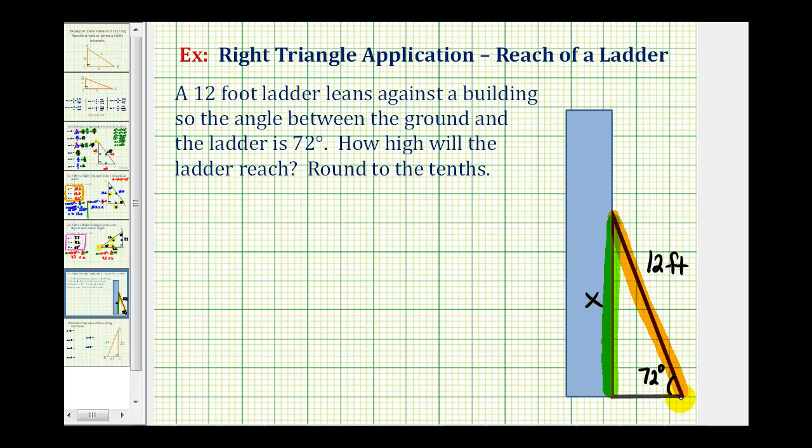And since the sine function value is equal to the ratio of the opposite side to the hypotenuse, we must use the sine function in our equation. The equation will be sine 72 degrees must equal the ratio of the opposite side to the hypotenuse, or in this case, x divided by 12.